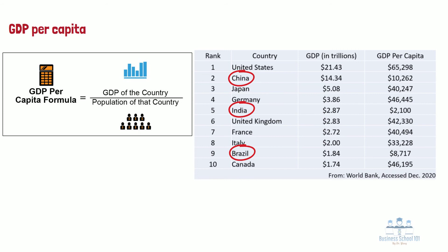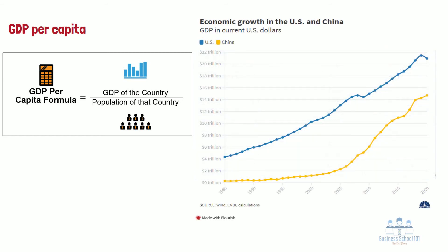For example, although China has become the second largest economy in the world since 2010, its GDP per capita was less than one-sixth of America's GDP per capita in 2020. Similarly, India, which is ranked number five in national GDP, has a GDP per capita less than one-thirtieth of America's. Nevertheless, it is worth pointing out that developing countries have caught up very fast in terms of their economic development at the global level. Based on the current growth rate, many economists predict that China will surpass the U.S. to become the largest economy in the world within the next decade, and India will also take the third position by that time.